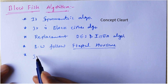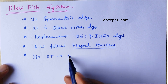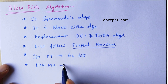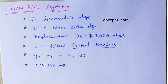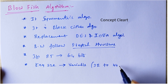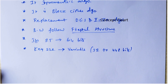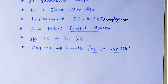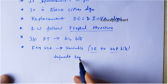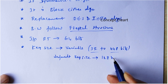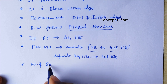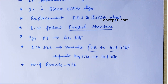The input plaintext is 64 bits and the key size is variable length — there is no fixed key size. It is variable length, from 32 to 448 bits according to your requirement. The default key size, if you are not specifying any key size, is 128 bits. The number of rounds is 16.